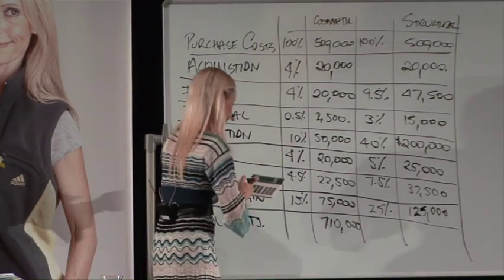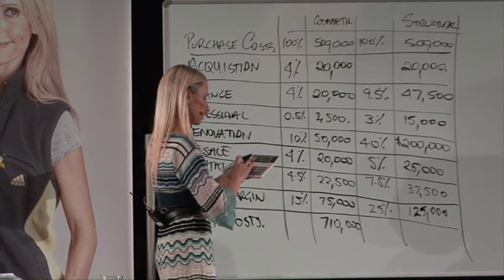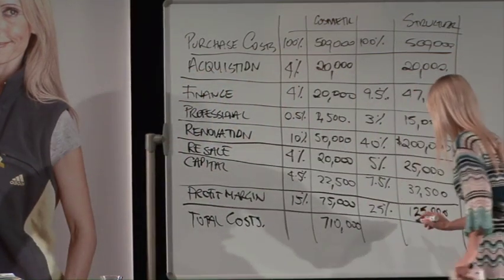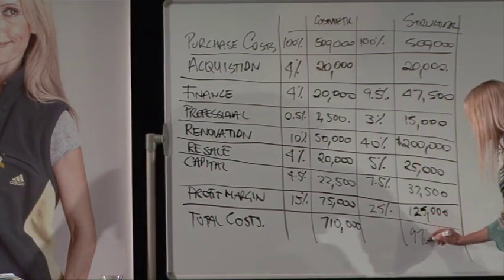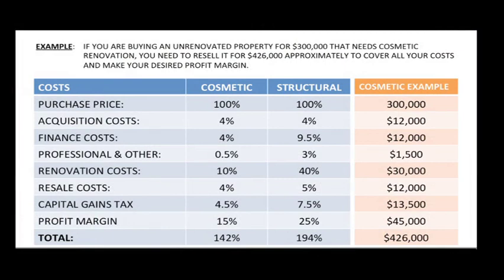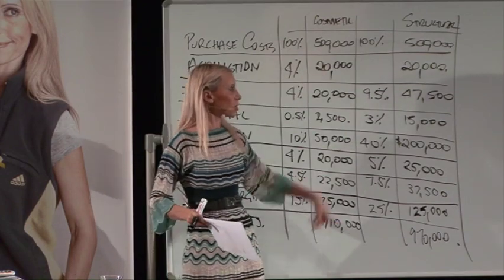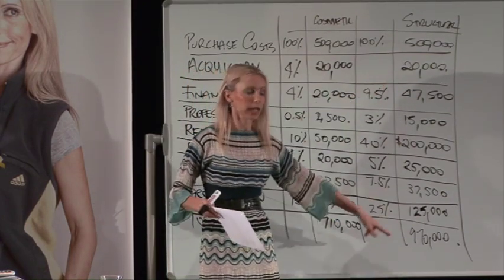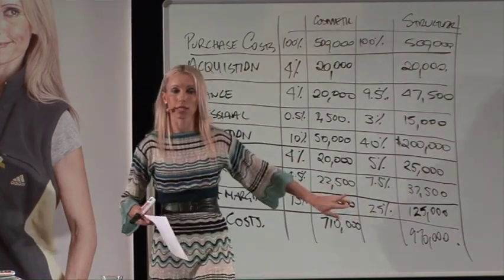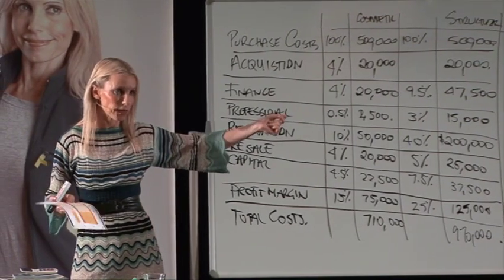If you add up total costs on a cosmetic renovation with a $500,000 purchase price you get around $710,000, and for a structural renovation around $970,000. So if you're buying a $500,000 house and doing a cosmetic renovation, you need to be reselling at around $700,000 to cover all costs and hit your desired profit margin. For a structural renovation you need to resell at almost $1 million — you've almost got to double the value, like taking a two-bedroom house to a four-bedroom house.